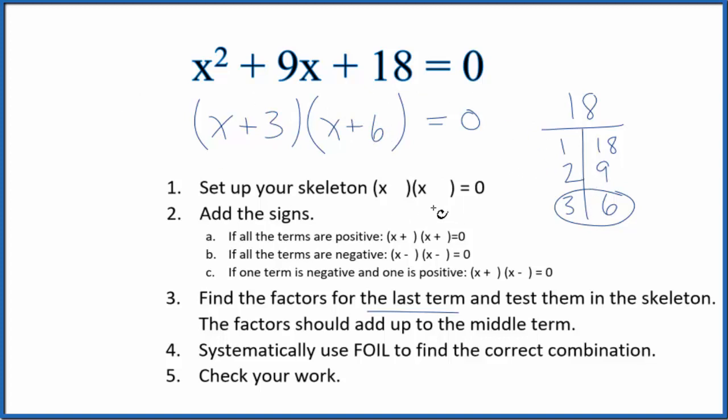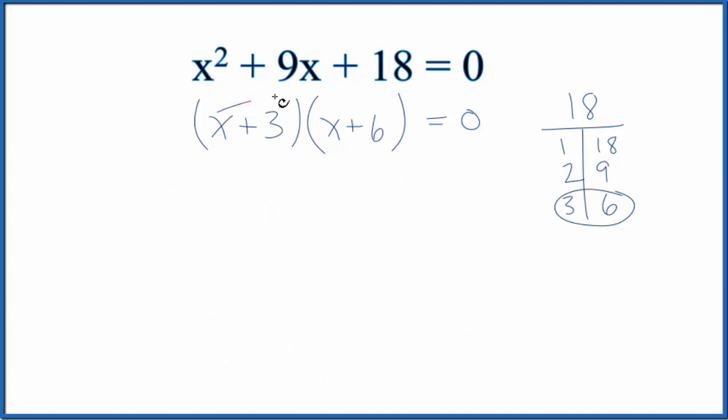We should check our work with the FOIL method. Let's do that. So we multiply the first terms: x times x is x². Outside: x times 6, that's 6x. Plus the inside term: 3 times x is 3x. And